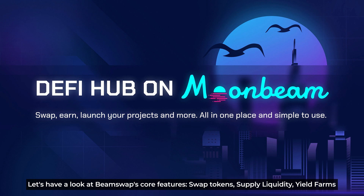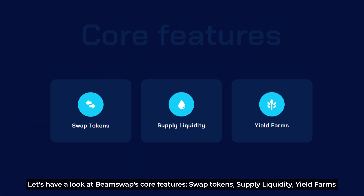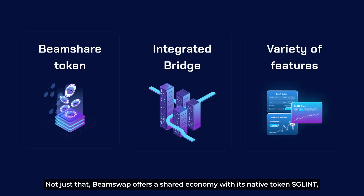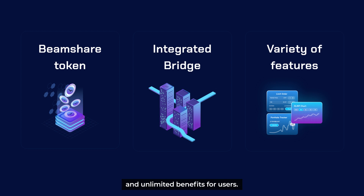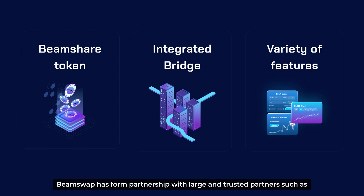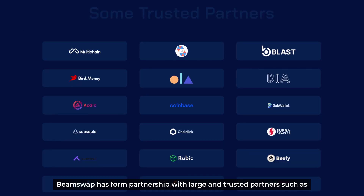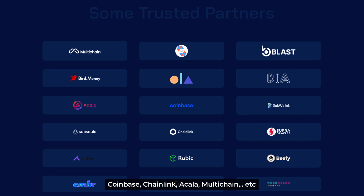Let's have a look at BeamSwap's core features: swap tokens, supply liquidity, and yield farms. Not just that, BeamSwap offers a shared economy with its native token and other outstanding services like the integrated BeamSwap bridge, portfolio tracker, and unlimited benefits for users. BeamSwap has formed partnerships with large and trusted partners such as Coinbase, Jetlink, Acala, MultiChain, and more.